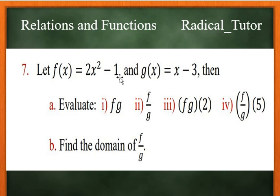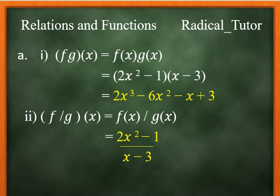Question number 7: Let f of x equal 2x squared minus 1 and g of x equal x minus 3. Find f times g at x, which is 2x squared minus 1 times x minus 3, equals 2x cubed minus 6x squared minus x plus 3. And f over g at x equals 2x squared minus 1 over x minus 3.